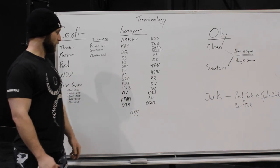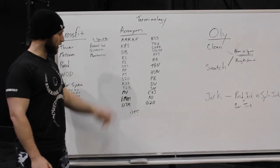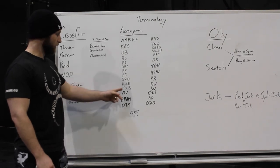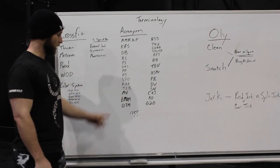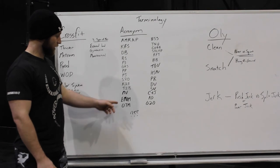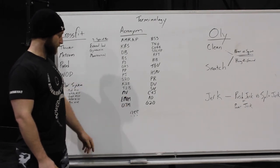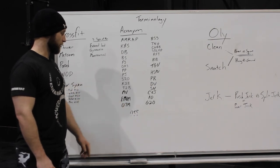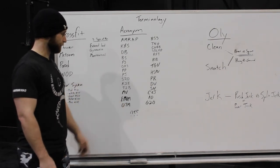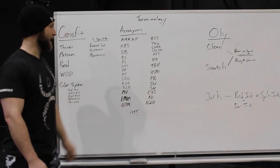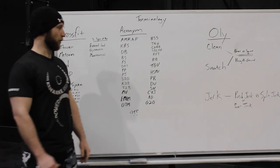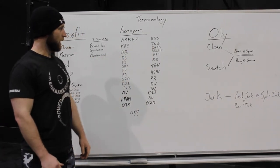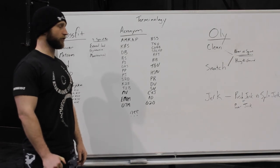S2O: shoulder to overhead. K2E: knees to elbows. T2B: toes to bar. MU: muscle-ups. EMOM or OTM: every minute on the minute or on the minute. BSS: Bulgarian split squat. TNG: touch and go. CGBP: close grip bench press.